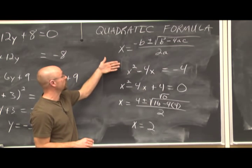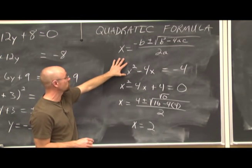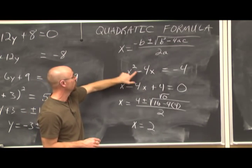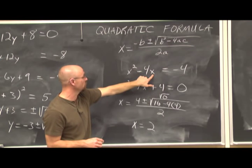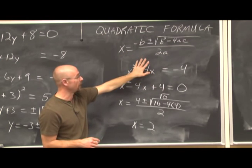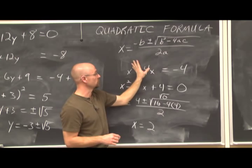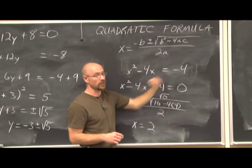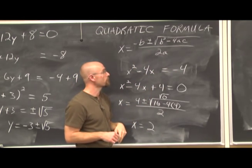We can check: 2 squared is 4, minus 4 times 2 is negative 8, so 4 minus 8 is negative 4. Negative 4 equals negative 4 — that's a true statement.